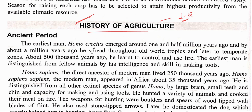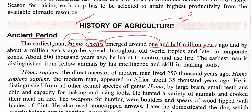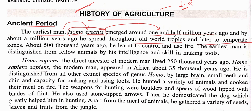We begin with the ancient period. The earliest man was Homo erectus — that is his scientific or zoological name. He evolved around one and a half million years ago. You only need to remember the zoological name and the year of evolution. Homo erectus moved through old tropics and later to temperate regions, from Africa to Europe and other temperate parts of the continents.